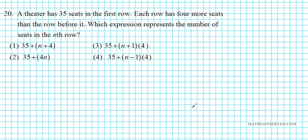All right. All right. Let's look at number 20. It reads, a theater has 35 seats in the first row. Each row has 4 more seats than the row before it. Which expression represents the number of seats in the nth row? Okay? So think about this nth row. Think about it as the nth term. The nth term of what? Nth term of an arithmetic sequence.